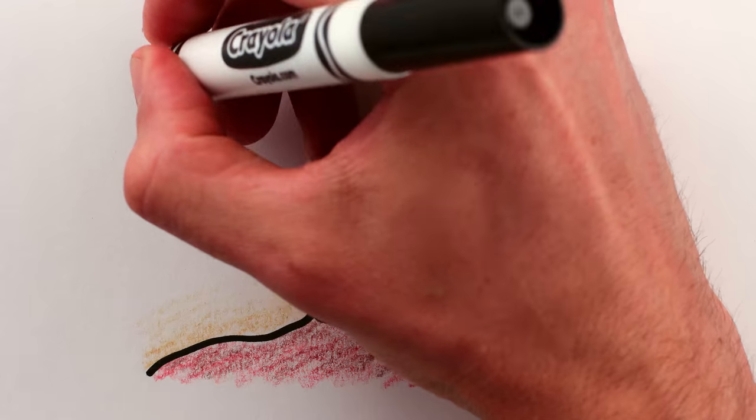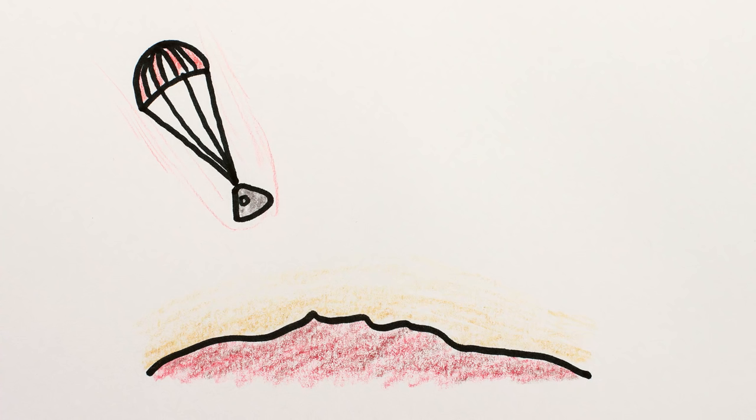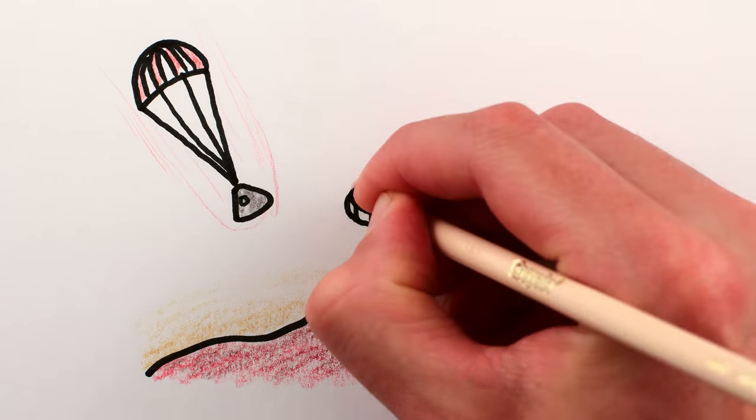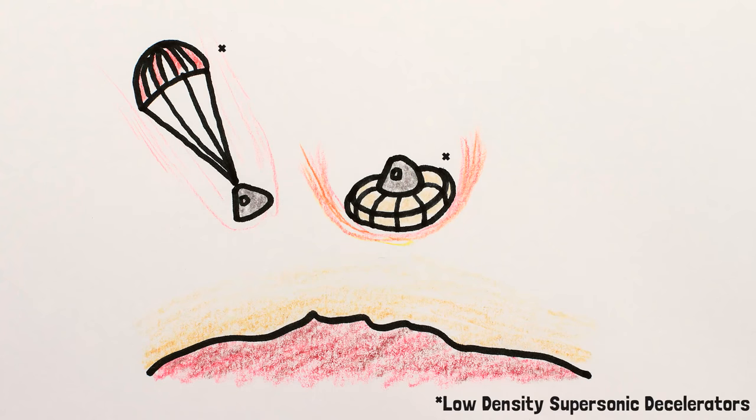And space agencies are testing other crazy things like giant supersonic parachutes and inflatable inner tubes around landers to increase their surface area and help them slow down more in the thin air before landing, probably still with rockets or sky cranes.